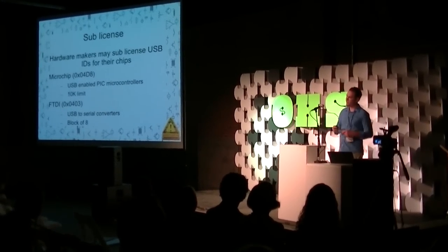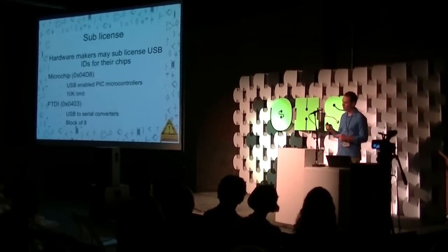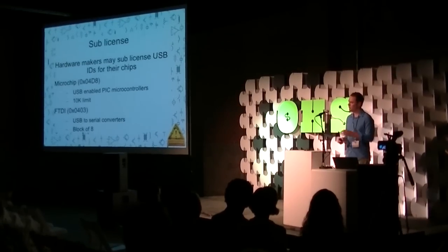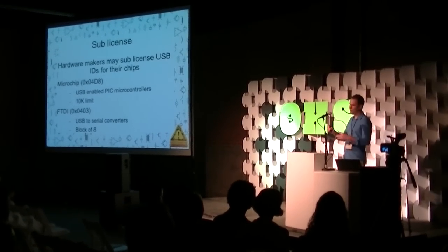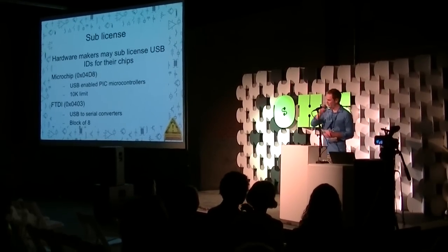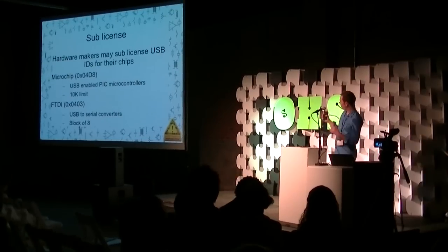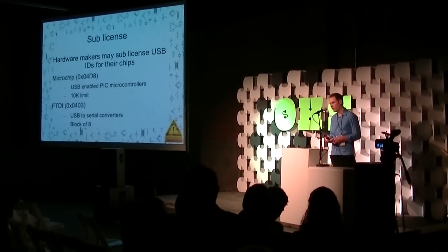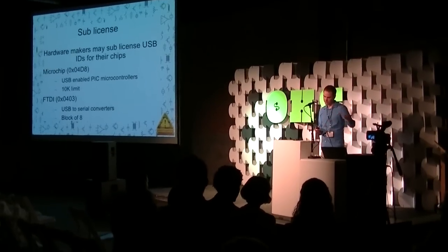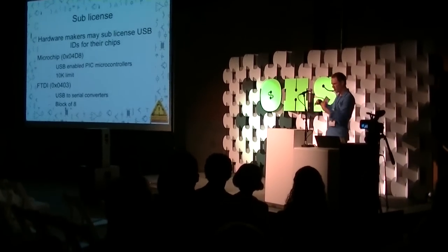There's one legitimate way to get an ID without shelling out $2,000: sub-license one from an authorized hardware manufacturer. The USB Implementers Forum lets some hardware manufacturers issue IDs for use exclusively with their own manufactured silicon. Microchip is one example — you can get a USB ID to use with their PIC microcontrollers, good for your first run of 10,000 units. FTDI, the maker of the chip in the original Arduino, will give you a block of eight IDs to use however you want as long as they're used in their chips.